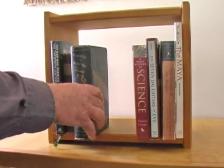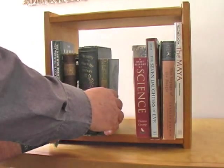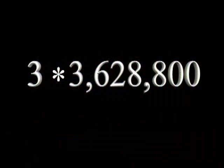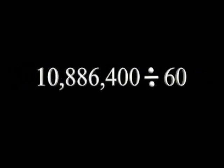How long would it take to set all of these up? We have allowed three minutes for each arrangement. Three minutes times three million, six hundred and twenty-eight thousand, eight hundred gives us ten million, eight hundred and eighty-six thousand, four hundred minutes. To change the time to hours, let's divide this by sixty. Completing that division, we get one hundred and eighty-one thousand, four hundred and forty hours.